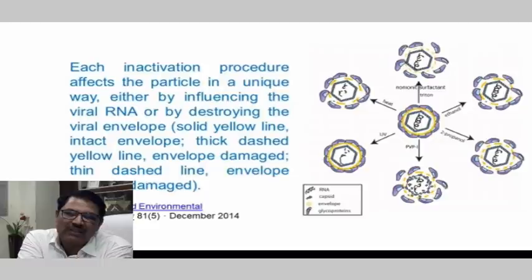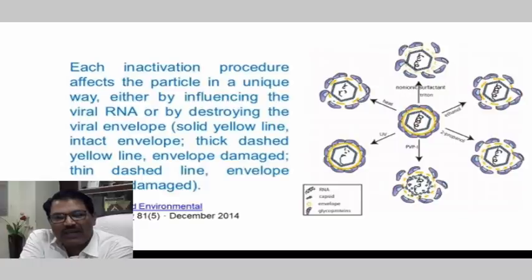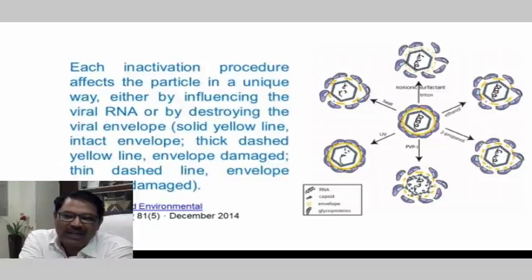UV light is different from all these. Even though the virus remains as it is structurally, the internal part — the RNA — is rendered of no use. This is very different from other sources. RNA is inside a capsule. There is an envelope — a yellow-colored envelope — and glycoproteins are also there. This is very important to know about.